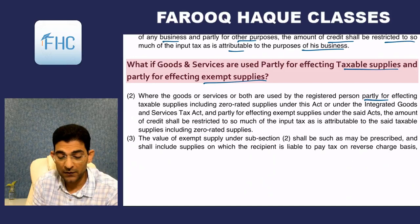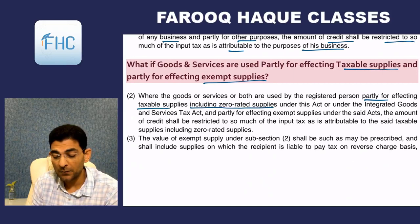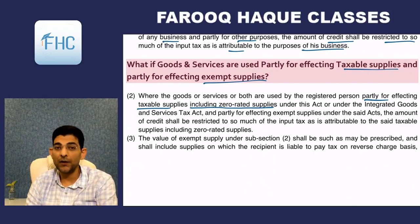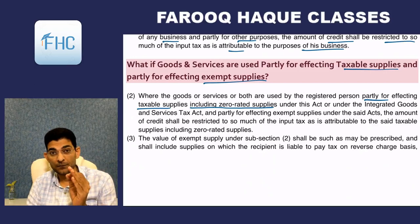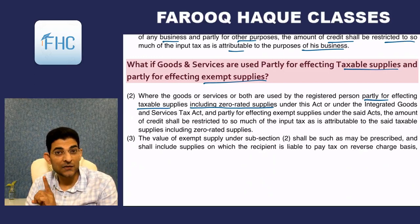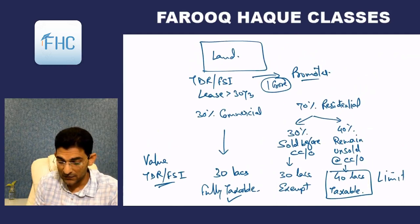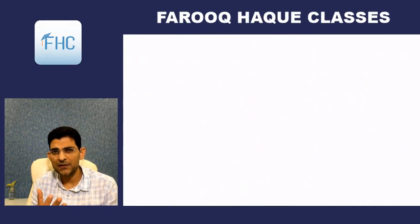Where goods and services or both are used by a registered person partly for affecting taxable supplies — including zero-rated supplies — credit is allowed. An important point: taxable supplies include zero-rated supplies. Zero-rated supplies are those where input tax credit is allowed even though the output supply is exempt.